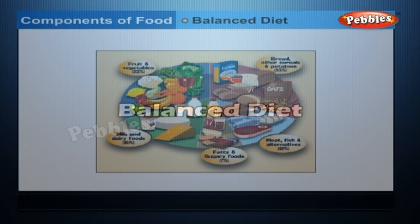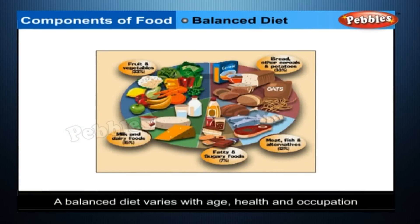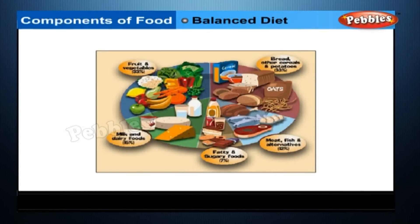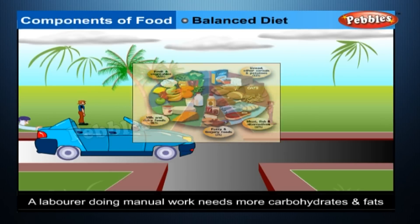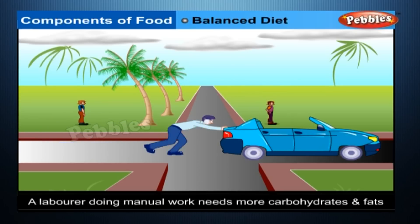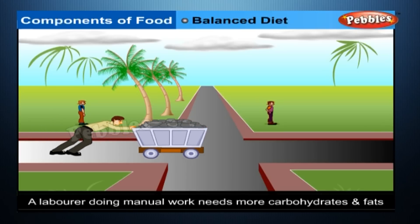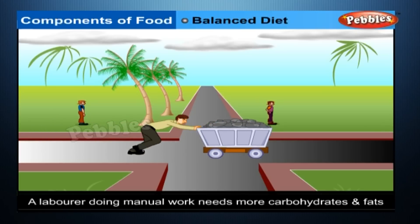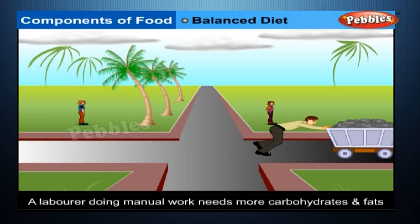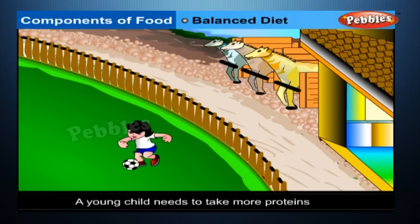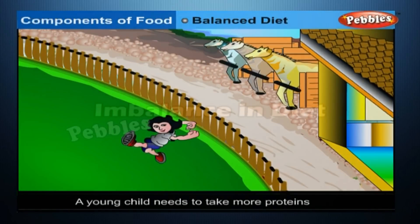A balanced diet varies with age, health and occupation. For example, a labourer doing manual work needs more carbohydrates and fats in his diet, which would provide him more energy. A young child needs to take more proteins as they help in body building.